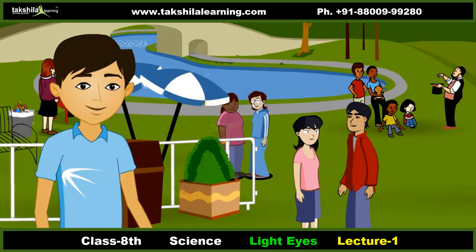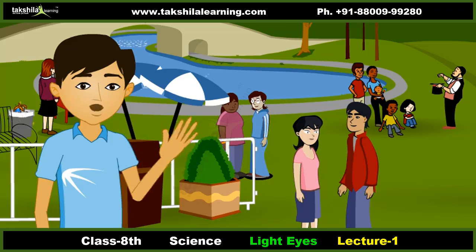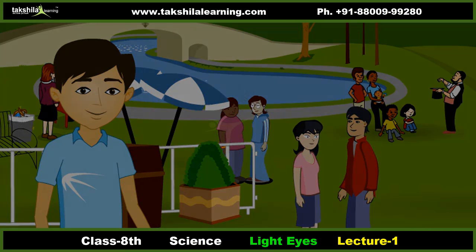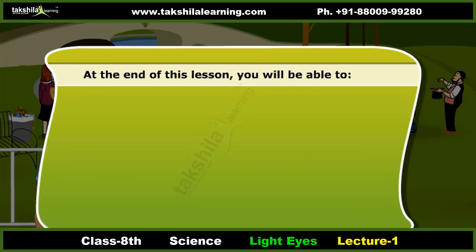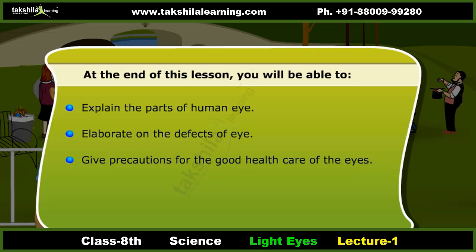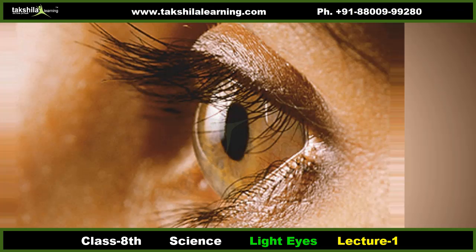Introduction: Vision is our most important sense organ in the human body. Our eyes enable us to see the beautiful world around us. At the end of this lesson, you will be able to explain the parts of the human eye, elaborate on the defects of the eye, give precautions for good eye health care, and comment on the Braille system.